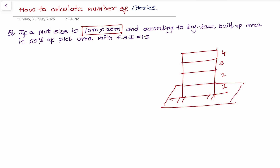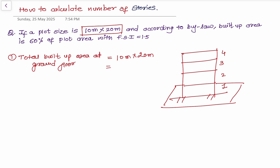To answer this question I can give you some calculations. First of all, you need to calculate the total built-up area at ground floor. In this case it is very simple — we multiply 10 meters by 20 meters, which gives us approximately 200 square meters.